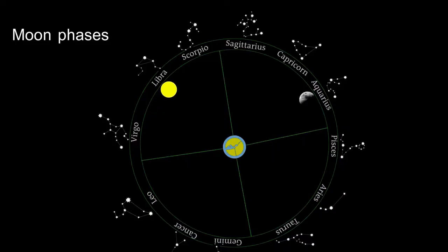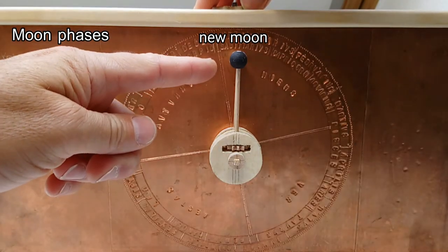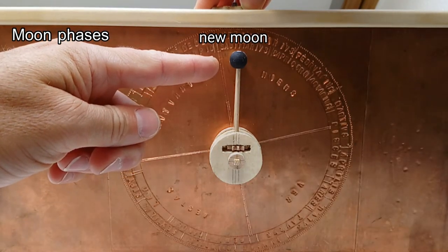So let's start with the simple thing, the lunar phases. In the course of the year the sun moves in front of the starry sky through the 12 zodiac signs. Likewise the moon but not in the course of the year but once a month. At the beginning the solar and lunar pointers overlap, it's new moon.